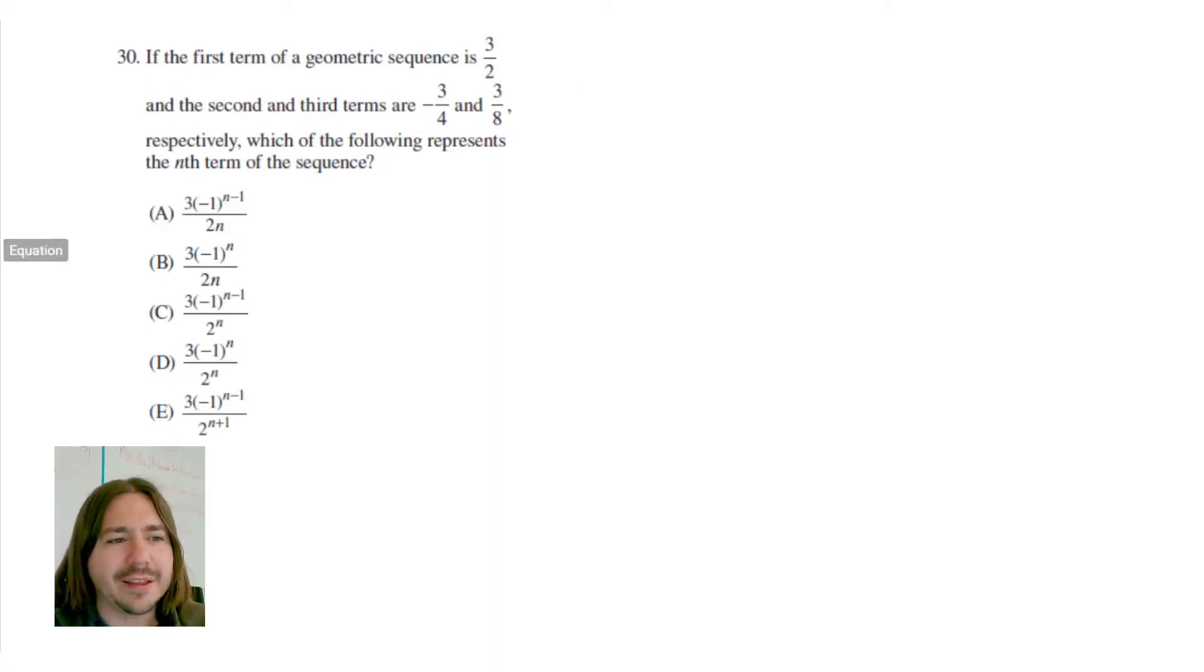Hey y'all, welcome back. In number 30, they're giving us the first three terms of a geometric sequence. So the first one is 3 halves, the second one is negative 3 fourths, and the last one is 3 eighths.